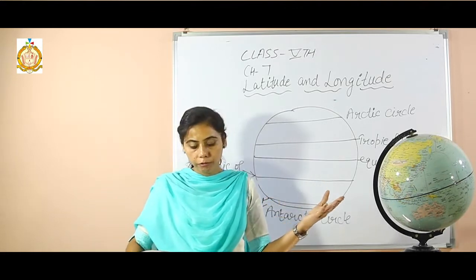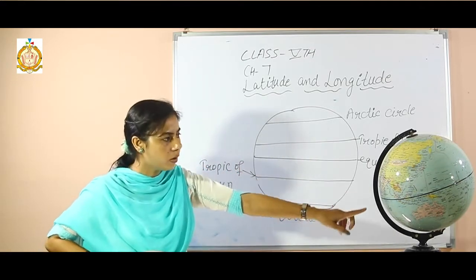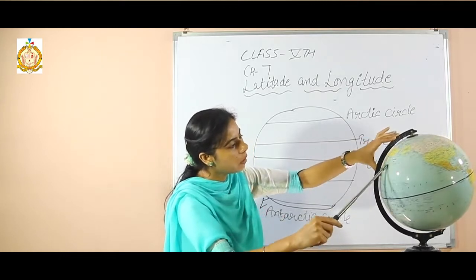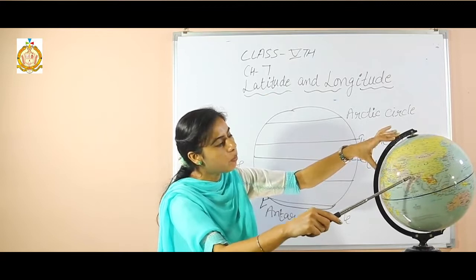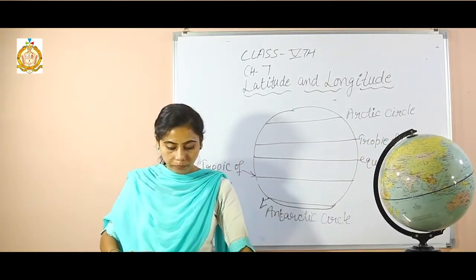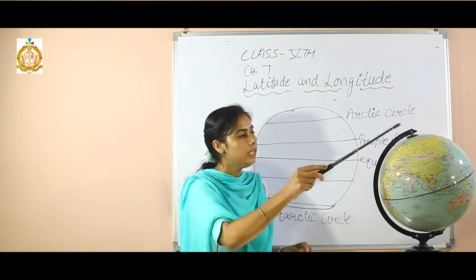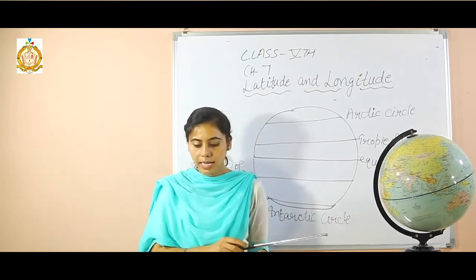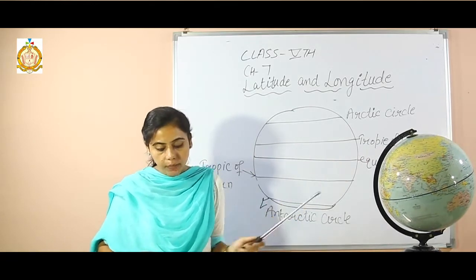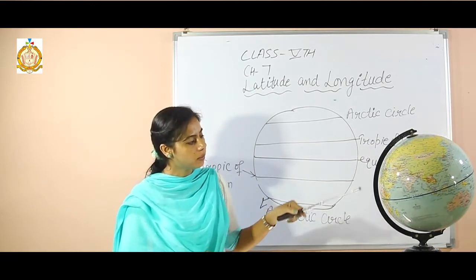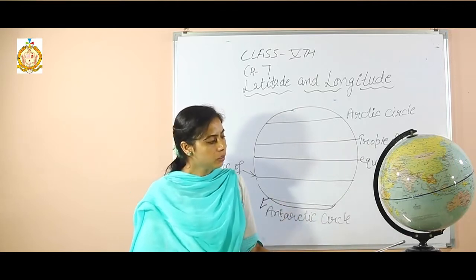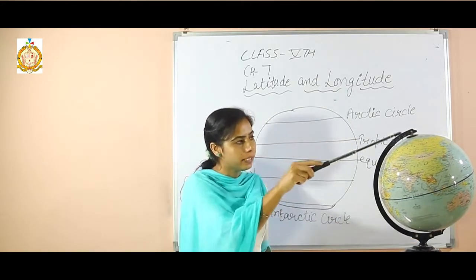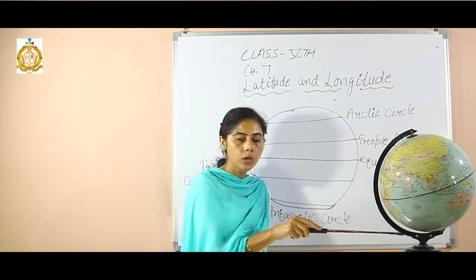The globe is a true model of earth. On the globe you can see the oceans, continents, seas and all the places. The needle fixed through the north and south pole is called an axis. The two points through which this axis passes are called the north pole and the south pole.